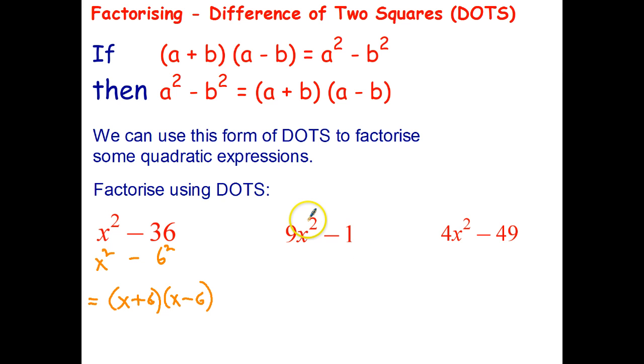Looking at the second one, first thing you have to ask yourself is: is that a perfect square? Is something squared equal to 9x² and is that a square? If the answer is yes you can use the difference of two squares. If no, you need to find an alternative method. I'm going to write this out as (3x)² - 1².